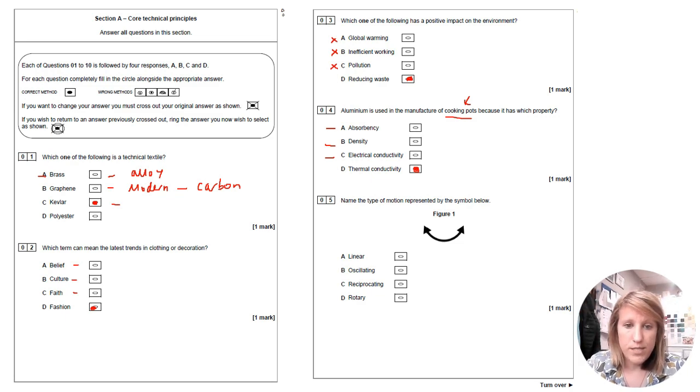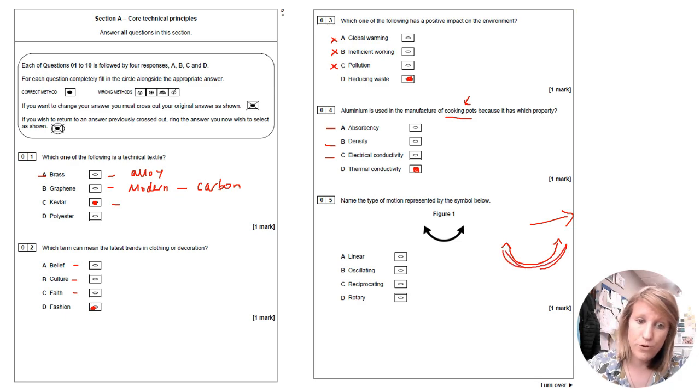Name the type of motion represented by the symbol below. So linear, linear would look like just in a straight line. Oscillating is this basically, so oscillating is like a pendulum kind of swinging back and forth. Reciprocating is just going back and forward or up and down in a straight line. So like someone punching or like, I don't know, what else could you do? Oh like a piston in a car. There's loads of different examples, I can't think of any. And rotary is obviously going around in a circle like a wheel or something or a windmill. So this one is oscillating.